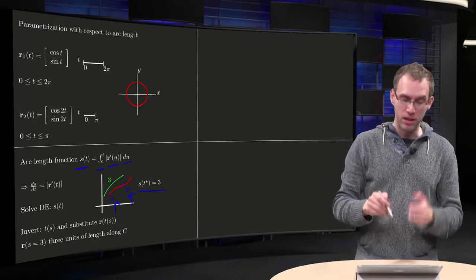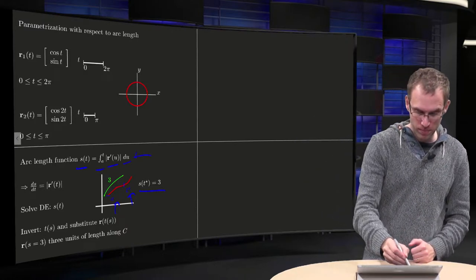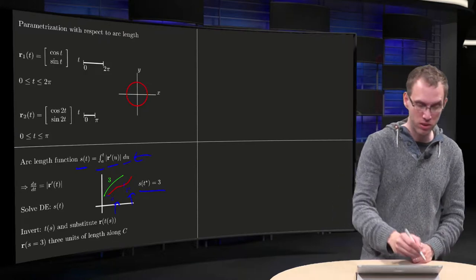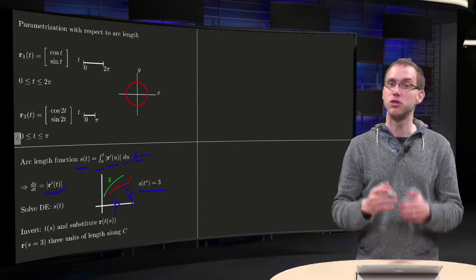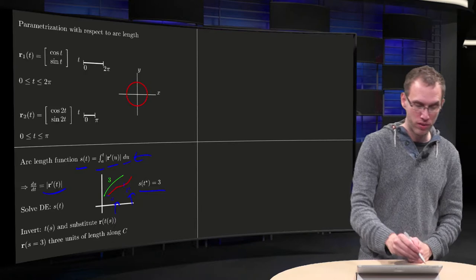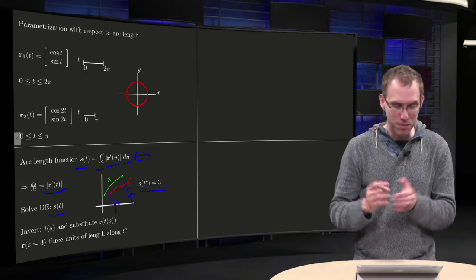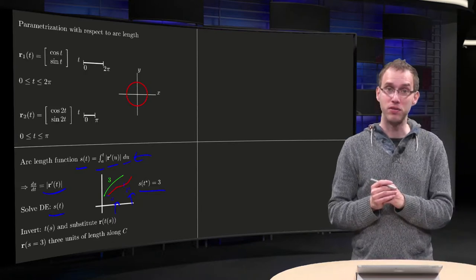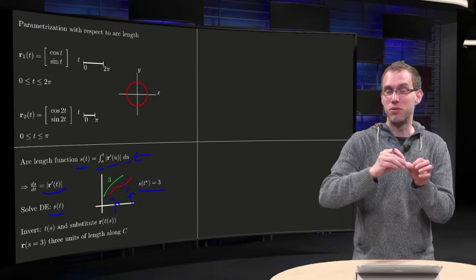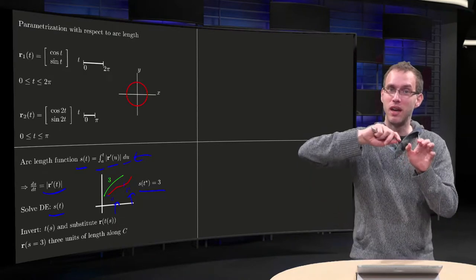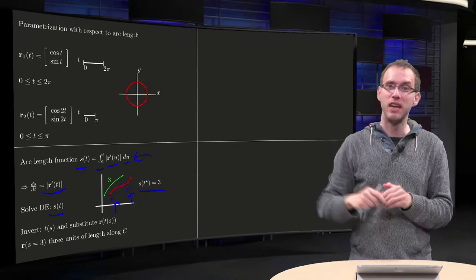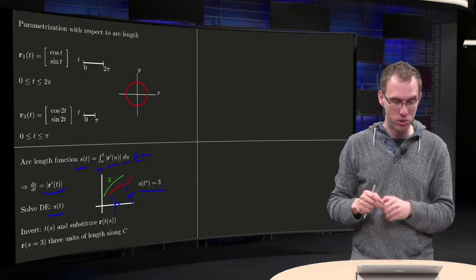Now you can solve this. If you differentiate with respect to t, you get a differential equation: dS/dt equals the length of r′(t), using the fundamental theorem of calculus. You can solve this differential equation to find S explicitly in terms of t. Then S(t) equals 3 means you have traveled 3 units of length in your parameter domain.